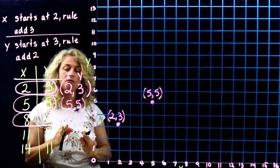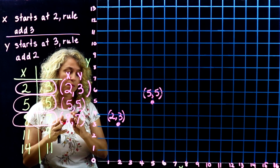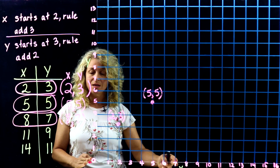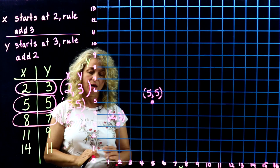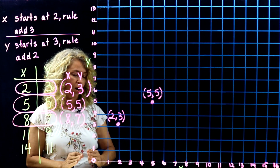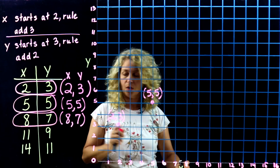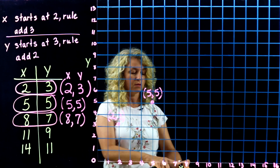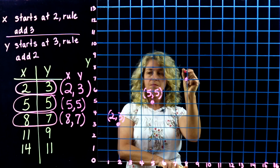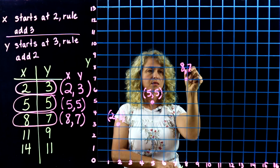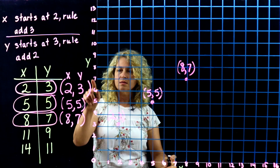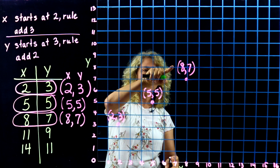Be very careful with (8, 7) — a common mistake is to go over 7 and up 8 instead. Because this is the X axis, you always go over that amount first. So go over 8 and up 7. That point is right here.